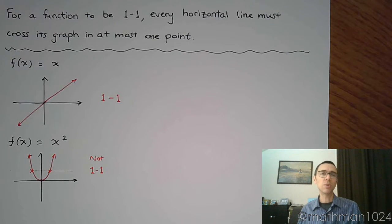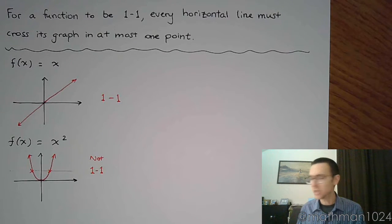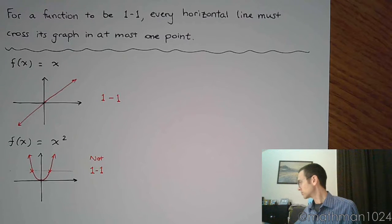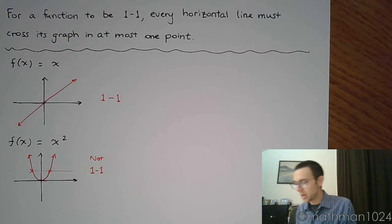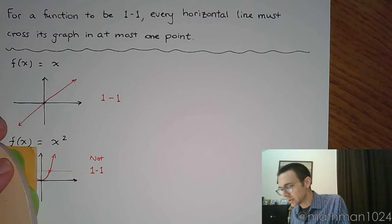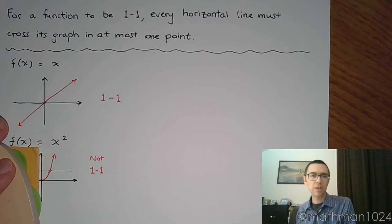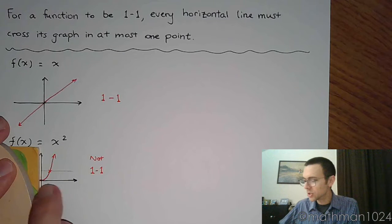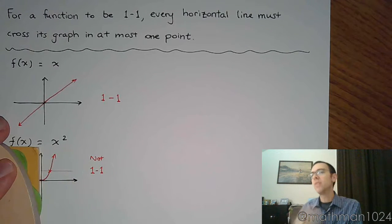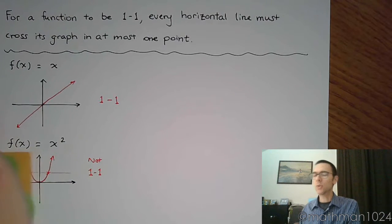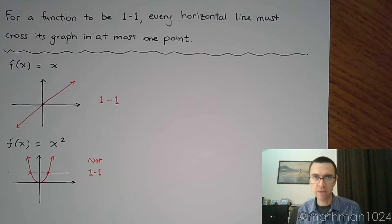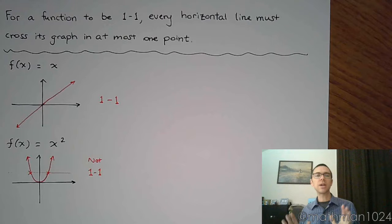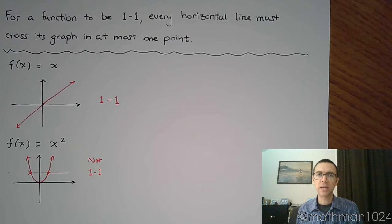Since it's not one-to-one, we can't really talk about it having an inverse unless we do something like this: if we were to cut off half of that and restrict the domain to just be from zero to infinity, then that guy would pass the horizontal line test and we could talk about what the inverse would be for that particular half of the graph. But as it stands right now, we can't say anything about it being one-to-one because it's clearly not.